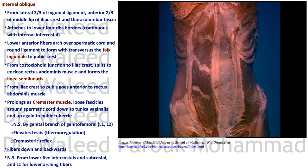The fibers of the internal oblique run downwards and backwards, opposite to the external oblique — the fibers of the two layers cross each other to form a meshwork, increasing the integrity of the abdominal wall rather than having fibers parallel to one another.